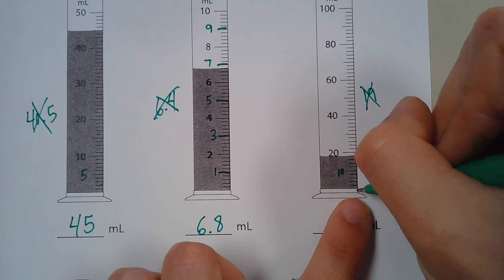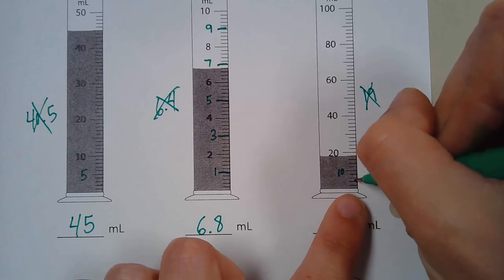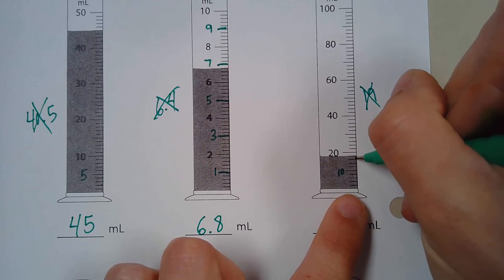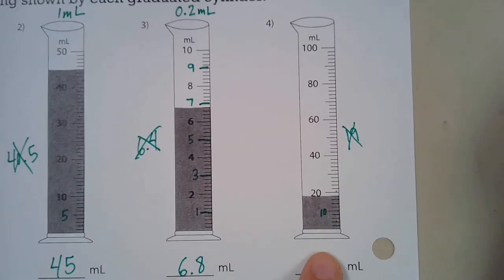So if we count by 1s, 1, 2, 3, 4, 5, 6, 7, 8, 9, 10, that's not the right scale for this graduated cylinder.